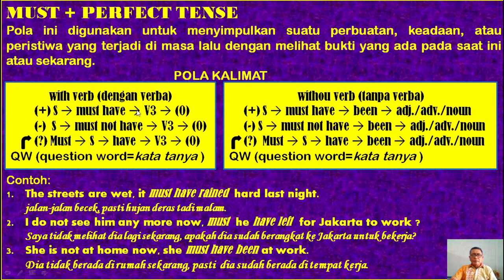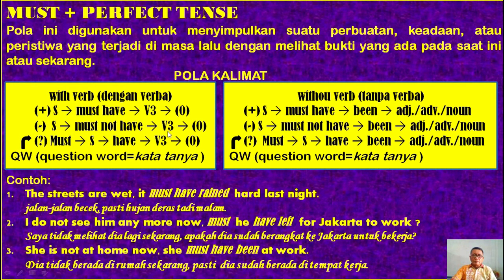Apabila kalimat menggunakan kata kerja (with verb), pola kalimat positif: subjek diikuti dengan 'must have', diikuti dengan V3 atau kata kerja ketiga, diikuti dengan objek (jika diperlukan). Negatif: subjek diikuti dengan 'must not have', diikuti dengan V3, diikuti dengan objek jika diperlukan.